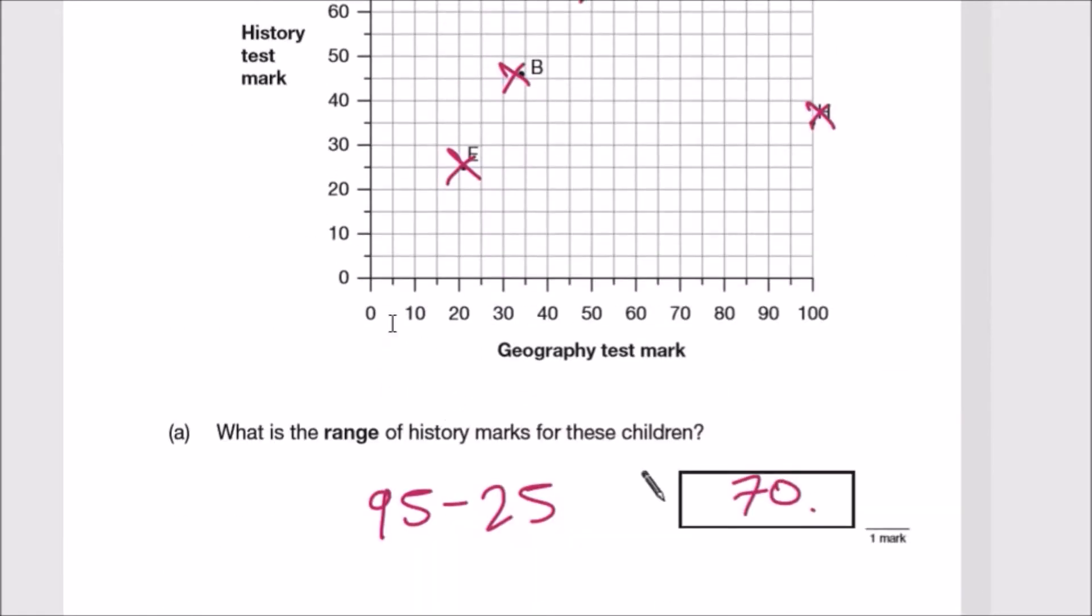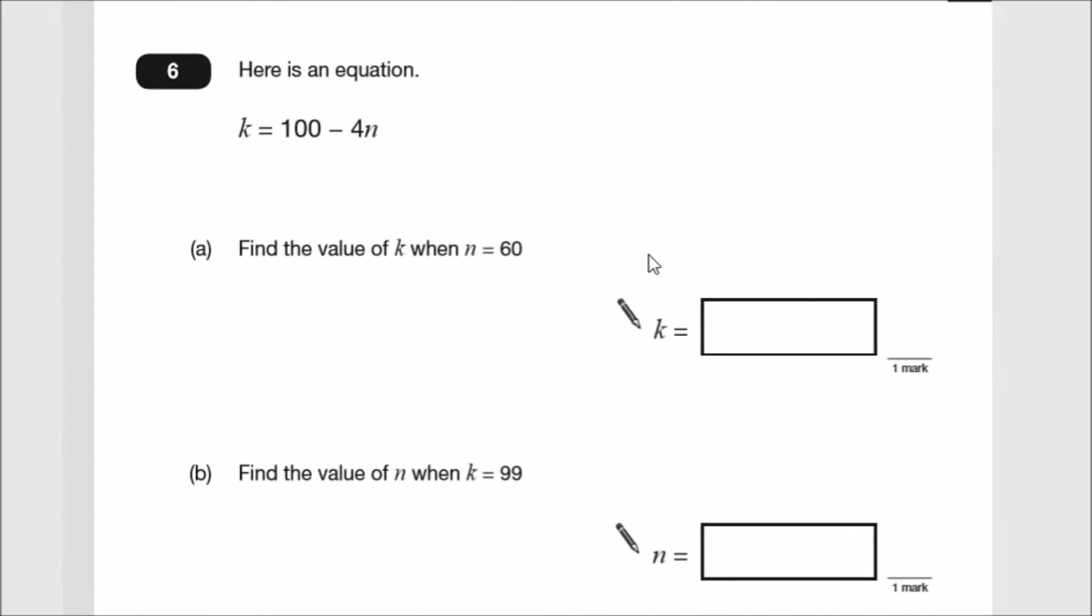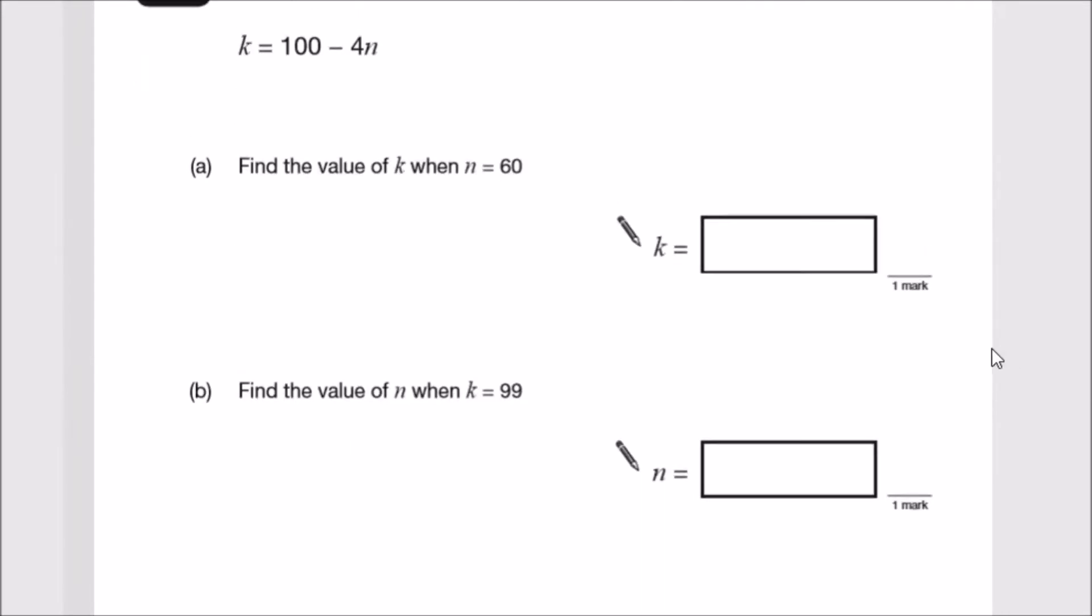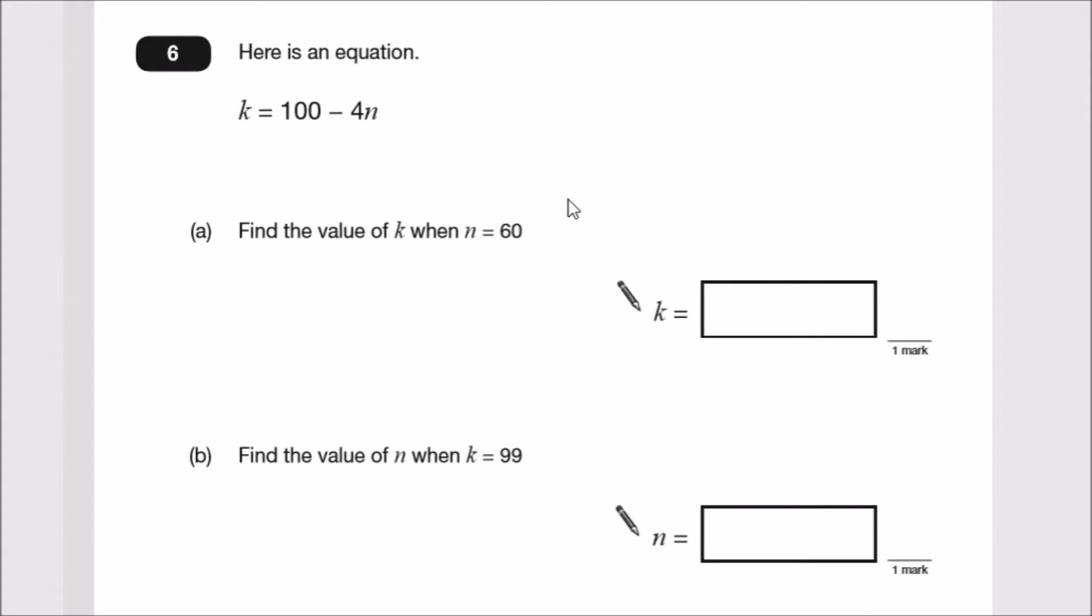Number six: Algebra. Here's an equation: k equals 100 minus 4n. Find the value of k when n is 60. When n is 60, write the equation as 100 minus 4 times 60, which is 240. So 100 minus 240 is -140.